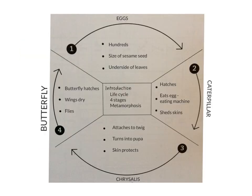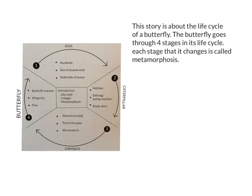So let's get started with our writing. I'm going to do my introduction first. In my introduction I said it's about the life cycle, that there are four stages, and as the butterfly changes each stage is called metamorphosis. So I'm going to put those ideas into my first paragraph. Here's my first paragraph — I've written these ideas into sentences: 'This story is about the life cycle of a butterfly. The butterfly goes through four stages in its life cycle. Each stage that it changes is called metamorphosis.' In this first paragraph I've told the reader what I'm going to be writing about.